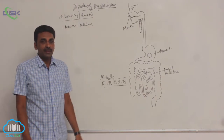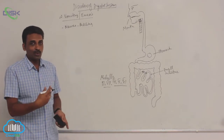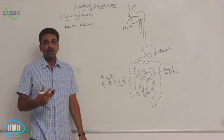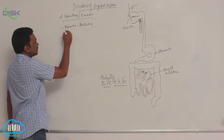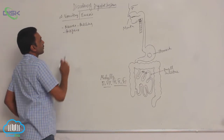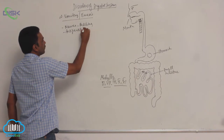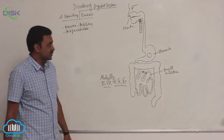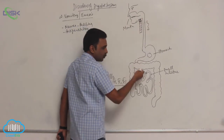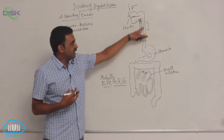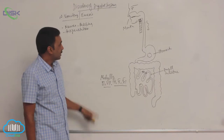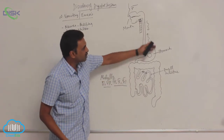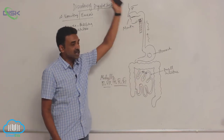Nausea occurs even before the vomiting has actually started. There is also retching, which means strong involuntary contractions of the gut. Additionally, there is anti-peristalsis. Normally, food moves downward by wave-like contractions called peristalsis, but during vomiting, a reverse peristalsis occurs — this is called anti-peristalsis.